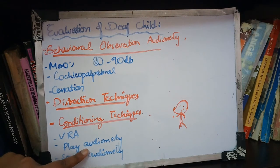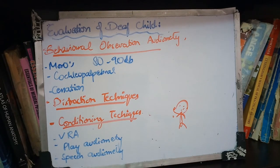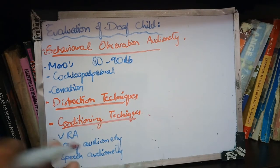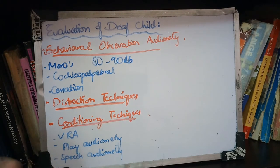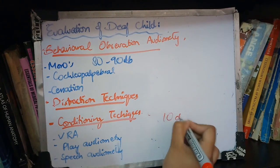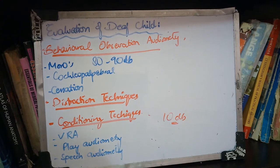The second technique is play audiometry. We first introduce a task to the child, and after giving any sound stimulus, the child performs the play activity. When the child hears sound at different intensities, they play the game. If you don't respond when you hear the sound, you don't know whether there is a hearing loss or not.